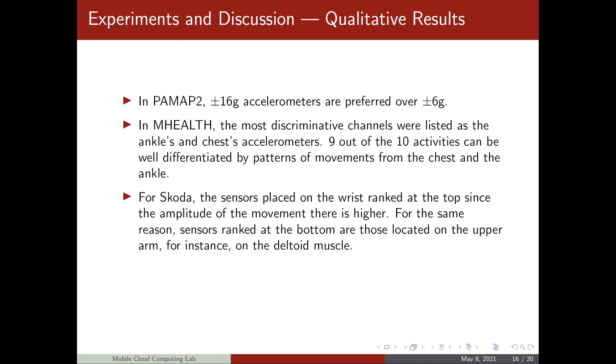The SCOTA dataset is comprised of activities that use only hands. And for this dataset, we notice that sensors placed on the wrist are ranked higher than those sensors placed on, for example, the upper arm on the deltoid muscle. The reason for this is that naturally, we can expect a higher amplitude of motion on the wrist than on the deltoid muscle. And therefore, more information is available for us from the sensors on the wrist.